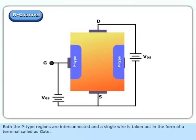Both the P-type regions are interconnected and a single wire is taken out in the form of a terminal called the gate.